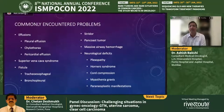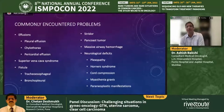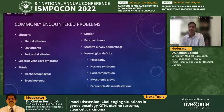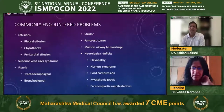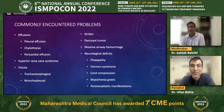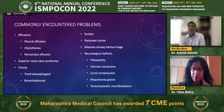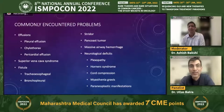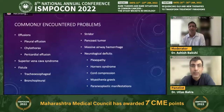Superior vena cava syndrome: management depends on histology. For small cell and other highly chemosensitive tumors, starting with chemotherapy is preferred over radiation as was done in the past. Interventional radiology now plays an increasingly important role — stenting for SVC thrombosis has shown fantastic results, with dramatic facial swelling resolution within two weeks. Combining chemotherapy with stenting as needed, followed by radiotherapy, gives the best outcomes.